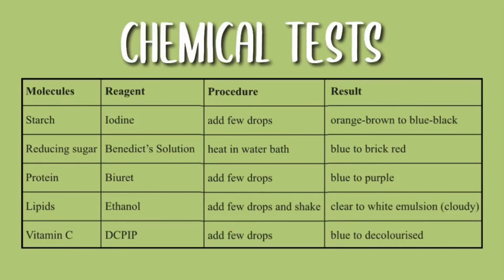And lastly, to test for vitamin C we would use DCPIP, which is a blue indicator. We add a few drops and the result would be from blue to decolorized.